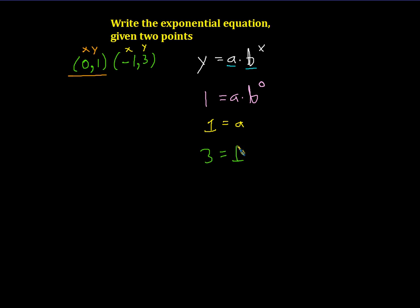So we'll go ahead and put that in there. And we don't know b, so we'll say times b. And then we'll raise that to the power of x, which is negative one. From this, we should be able to solve for b.